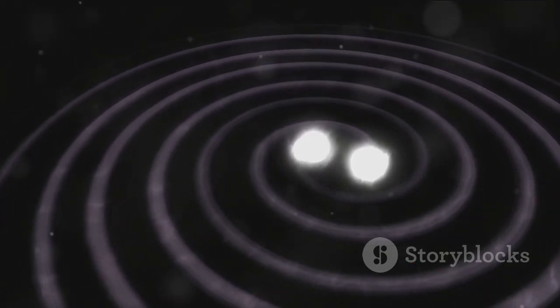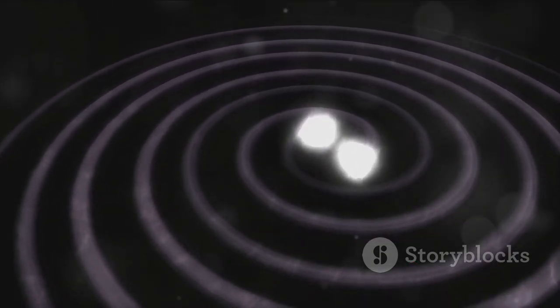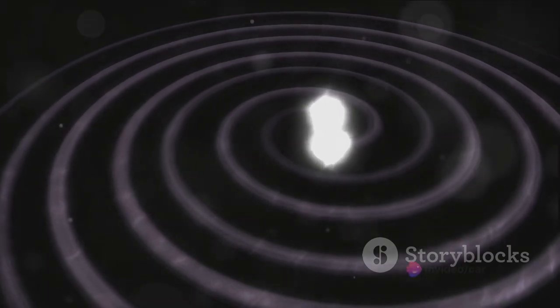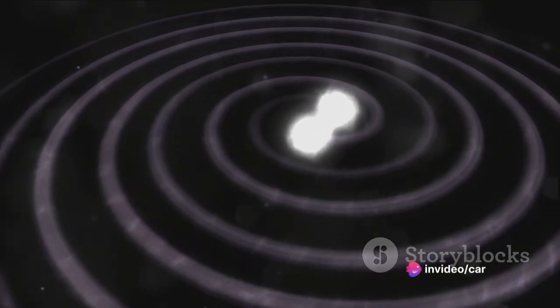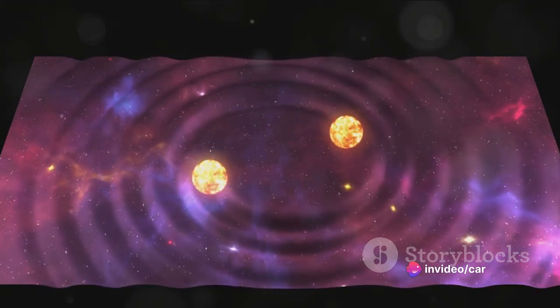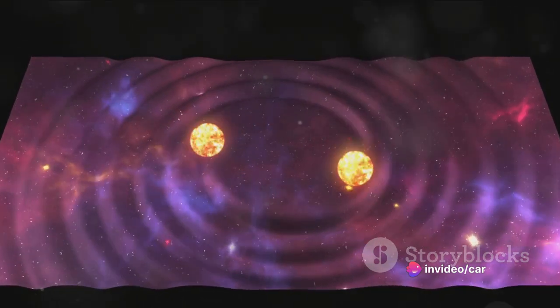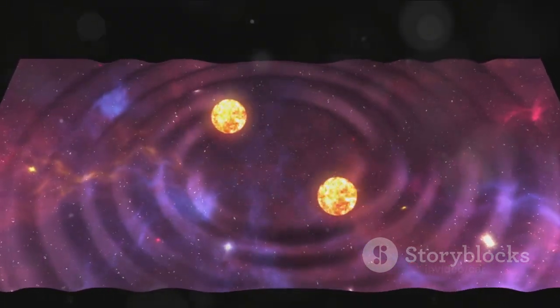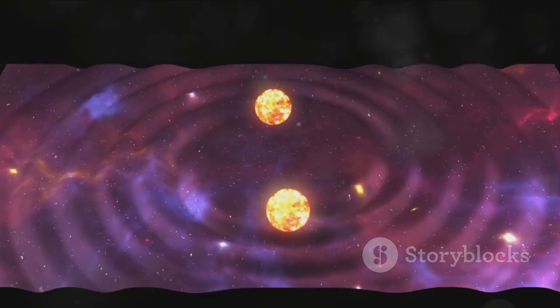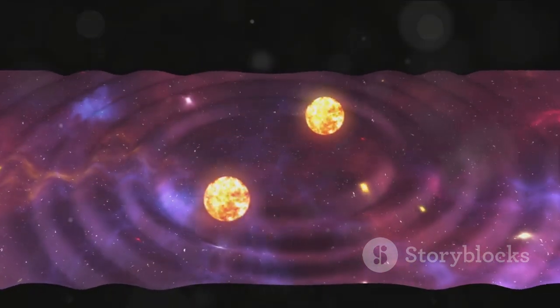The discovery of EBLM J055557 AB was a breakthrough moment for astronomers. This tiny star was found using a method called gravitational microlensing, which essentially involves the light of a more distant star being magnified by the gravity of a closer star, as predicted by Einstein's theory of relativity.